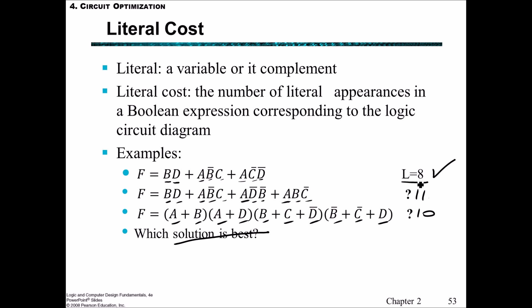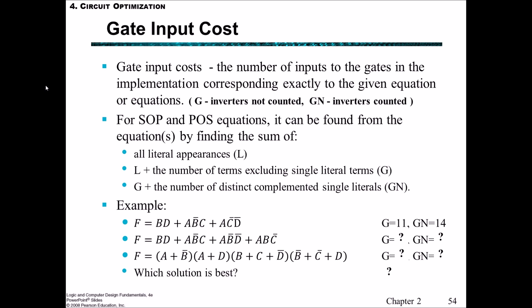In terms of the gate input cost, we say this is the number of inputs to the gates in the implementation, and this corresponds exactly to the given equation. G is just the literals plus the number of group terms, and GN is G plus the number of distinct complemented single literals. For sum of products or product of sums, it can be found for the equations by first finding all the literal appearances L. And then if you want to find G, we have all the literal appearances plus the number of terms excluding any single literal terms. So this is only terms that are grouped together. And if we want to find GN, then this is G plus the number of distinct complemented single literals.